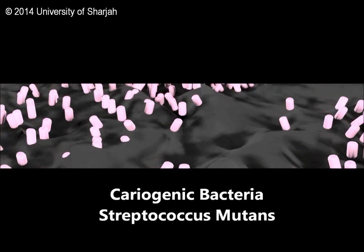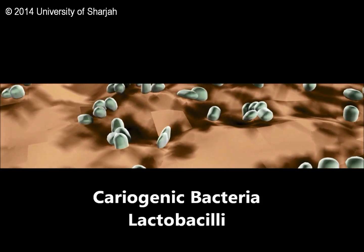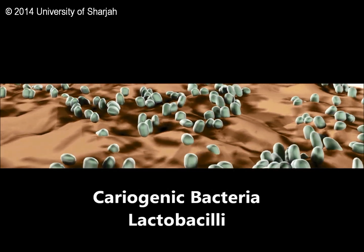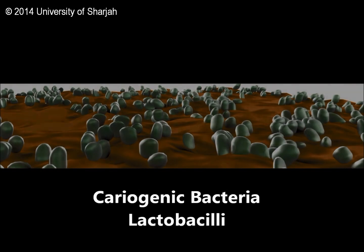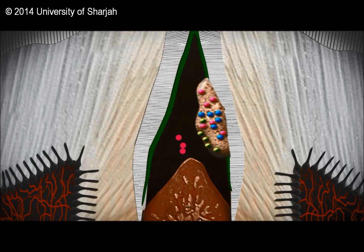Cariogenic bacteria need carbohydrates to ferment into acid. These bacteria can store carbohydrates both intracellularly and extracellularly. The extracellular polysaccharides, called glucans, increase plaque bulk. Bulky plaque interferes with the outward diffusion of acid and inward diffusion of salivary buffers. Acid produced by bacteria lowers the pH and dissolves the minerals of the tooth.